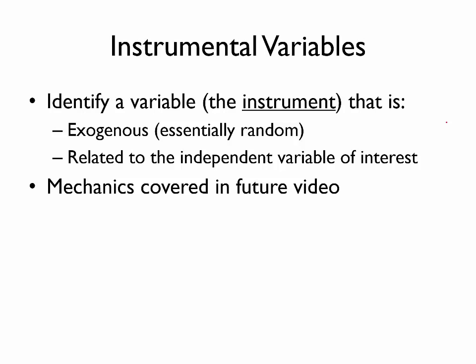So the instrument that Josh Angrist proposed was a selection into the draft. And this is random because of the random nature of the draft. Those who were drafted were drafted based on randomly selected birth dates. And so it does seem like this proposed instrument is indeed exogenous.